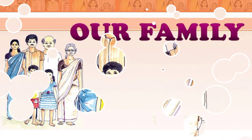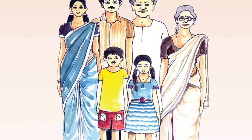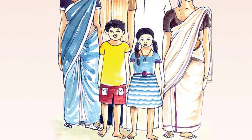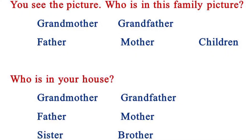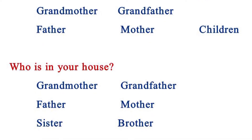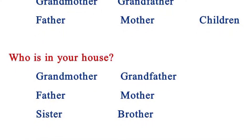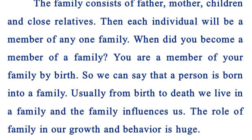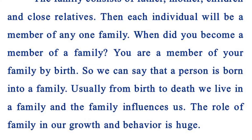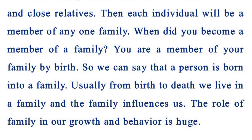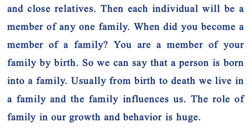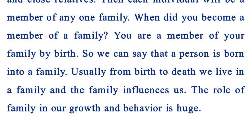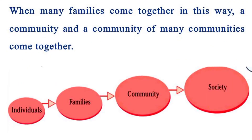Chapter 3: Our Family. You see the picture — who is in this family picture? Grandmother, grandfather, father, mother, children. Who is in your house? The family consists of father, mother, children and close relatives. Each individual is a member of one family. You are a member of your family by birth — a person is born into a family. Usually from birth to death we live in a family, and the family influences us. The role of family in our growth and behavior is huge.